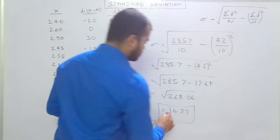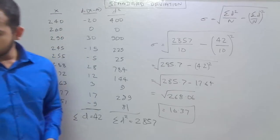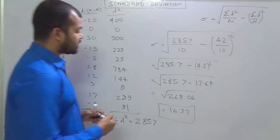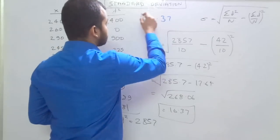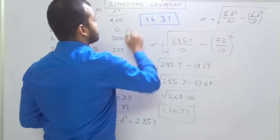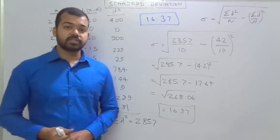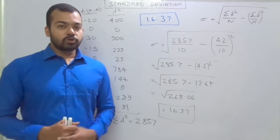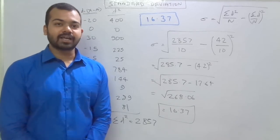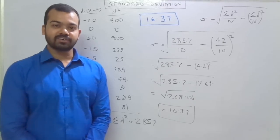This is the answer for the standard deviation. This is how we calculate the standard deviation. The answer for this is standard deviation is 16.37. Hope you like this video. This video is all about individual series when we are calculating standard deviation. Thank you so much. Stay tuned. Please subscribe this channel and share this video to your friends. Have a nice day.